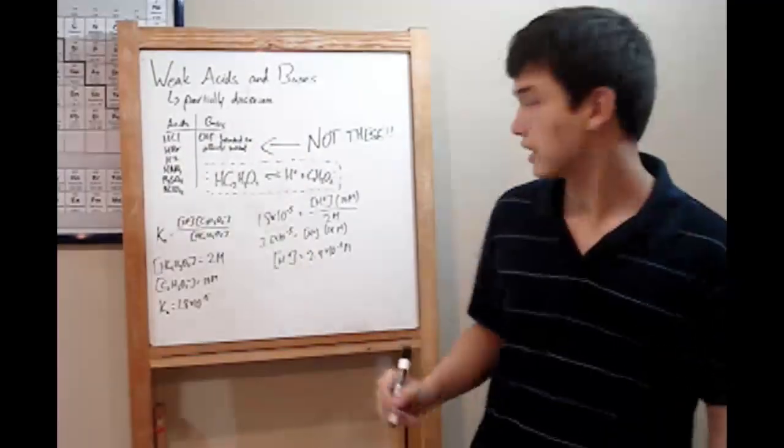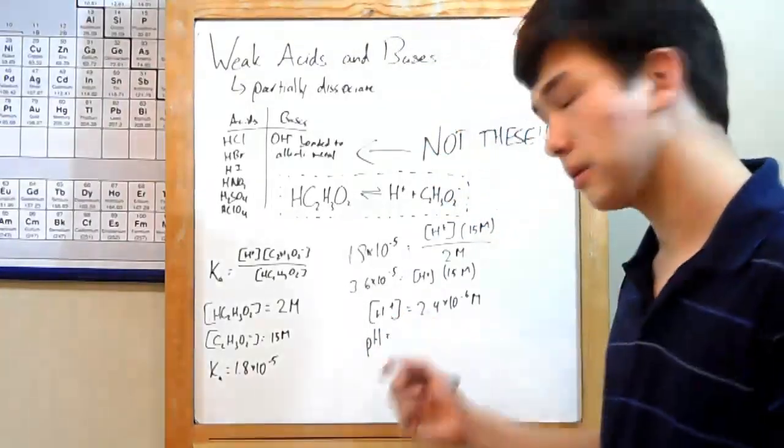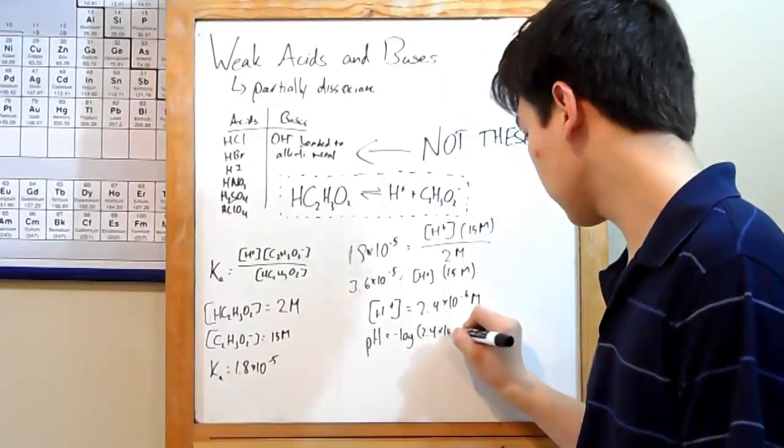Now that you have that, you can move on and calculate your pH. pH is negative log of the concentration of H plus ions. What we just calculated, so just plug that in. Negative log of 2.4 times 10 to the negative sixth.